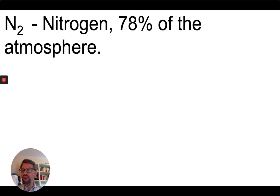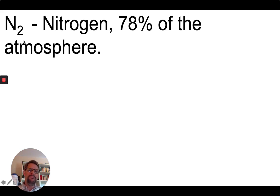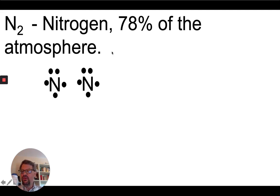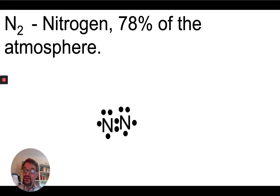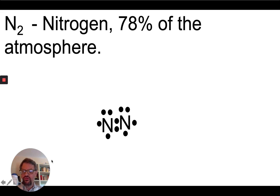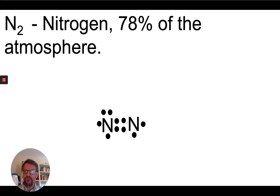One more: N₂, nitrogen, which makes up 78% of the atmosphere. When you breathe in air, only about 19% is oxygen — 78% is nitrogen. Nitrogen has five valence electrons. We have two nitrogen atoms, and we'll put them next to each other starting with a single bond. As you're probably thinking by now, the issue is the octet: each nitrogen at this point only has six valence electrons. So we take two of those electrons and put them between the nitrogens.